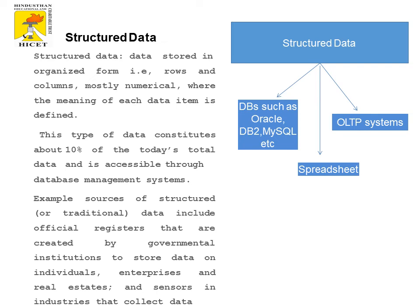Structured data constitutes about 10% of today's total data and is accessible to database management systems. Examples of structured data include official registers of government institutions that store information about individuals, such as an employee database.